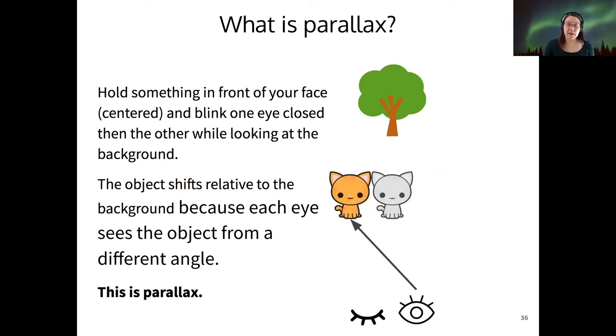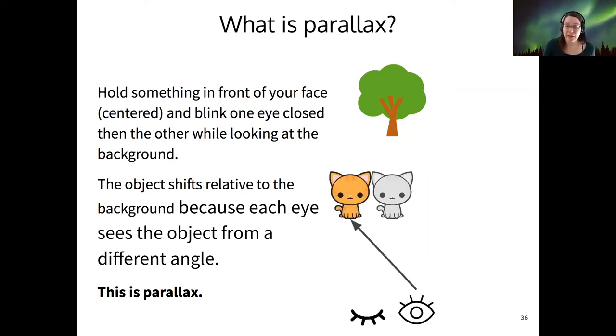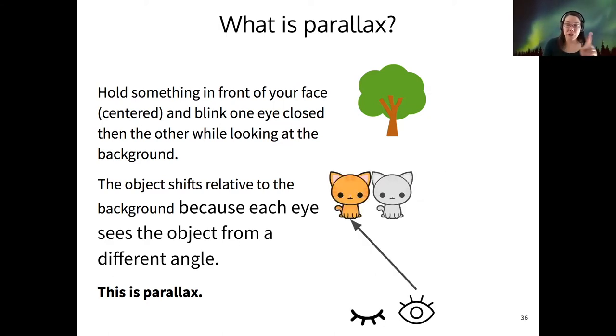Then the cat appears to shift relative to the background, and that's because each eye is seeing the object from a different angle. So the apparent shift is called a parallax shift, and you can measure the parallax shift using an angle, which we call the parallax angle.